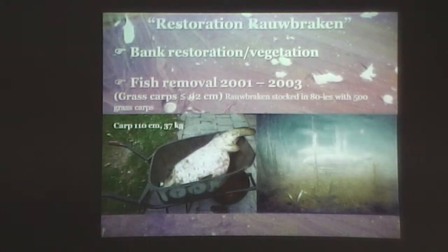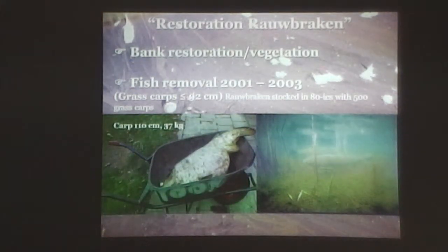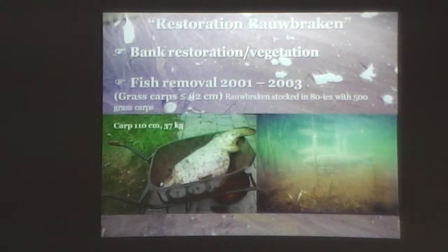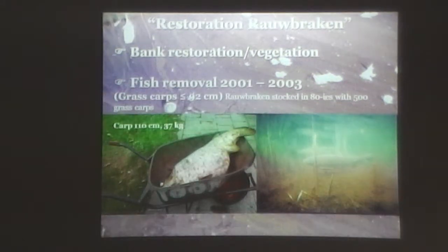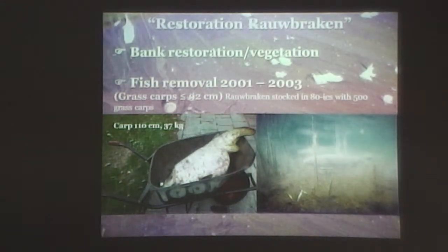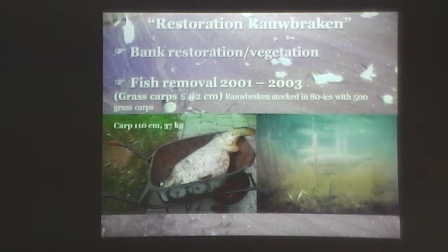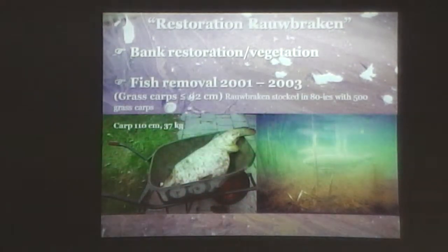We noticed that grass carps can eat 150% of their body weight per day during summer. And these guys were 9 to 10 kilograms each. So we just went to the supermarket and weighed heads of lettuce — this came down to 62 heads of lettuce they were eating per day. So we have an idea how much macrophytes they can consume and how much nutrients they can bring into the water.